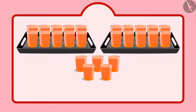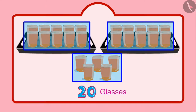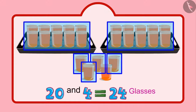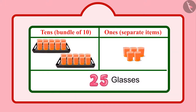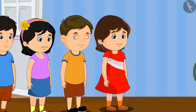Children, can you tell me how many glasses of sherbet were distributed by Chotu and Aarti together? Come on, let's see. First of all, Chotu distributed 2 groups of 10 glasses, that is 20 glasses of sherbet, and then 5 more glasses. That makes it 21, 22, 23, 24, 25. Chotu distributed 25 glasses of sherbet. In these 25 glasses, 2 means 2 tens and 5 means 5 units.